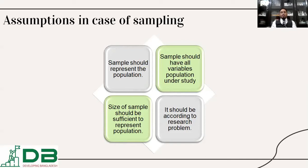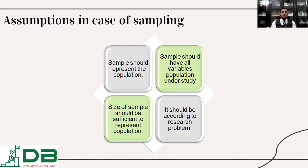If we have six different groups of age ranges, then our sample should have all the different age limit groups represented in the sampling. The size of the sample should also be sufficient to represent the population. If you are studying a population of 50 million and you select only five samples, it is not representative. There are several equations, models, and statistical tools to determine the appropriate sample size so that the sample is representative of the total population.